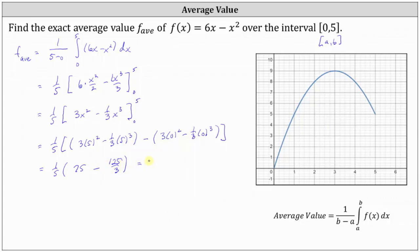Continuing to simplify, we have 1 5th times the quantity. 75 is equal to 225 thirds. And 225 thirds minus 125 thirds is 100 thirds, giving us 1 5th times 100 thirds.